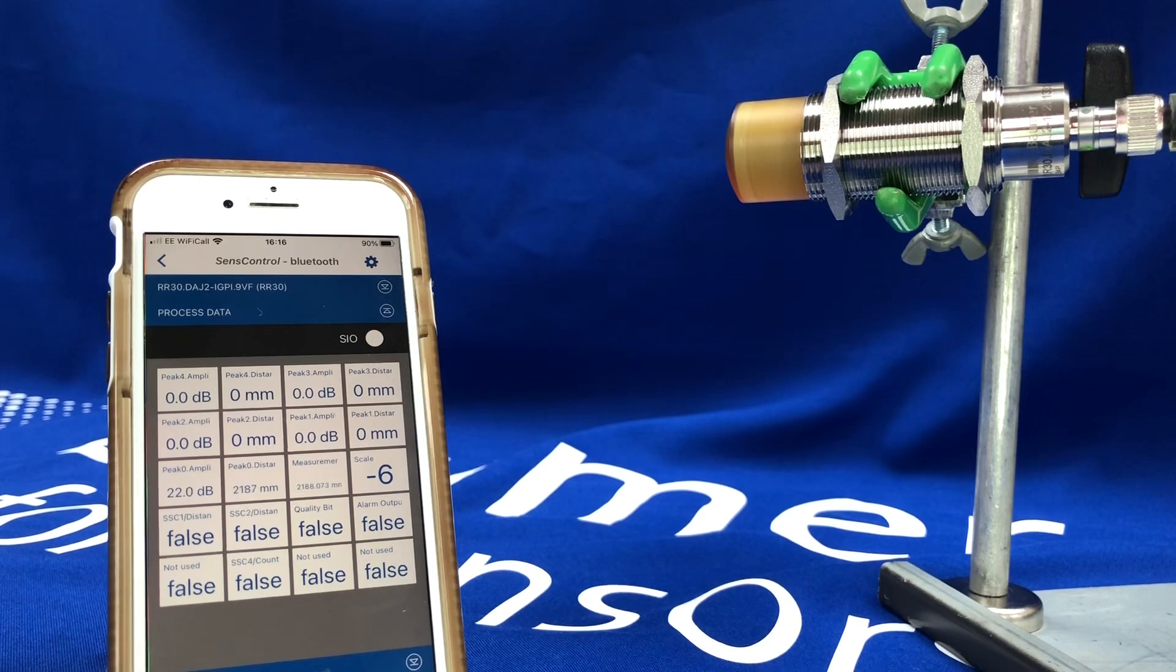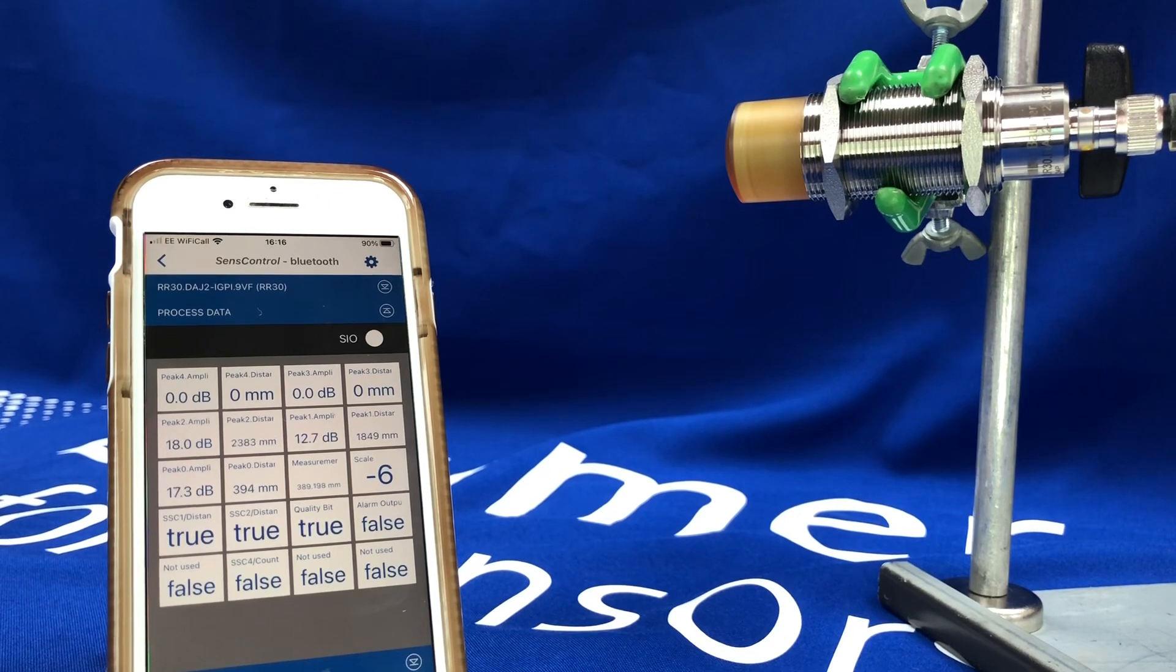For example, if I put a box now that you can see just appearing in shot, around 300mm away. If I can just get it into the view, there we go, around 300mm away from the sensor. It's giving the measurement there.